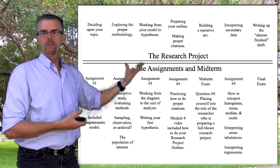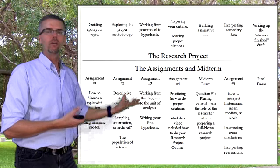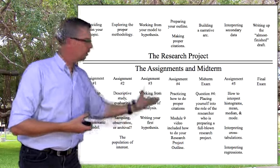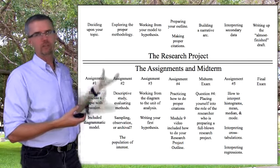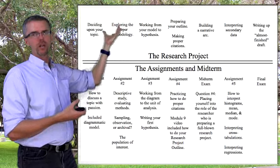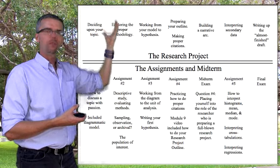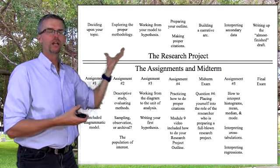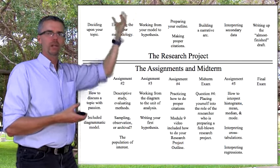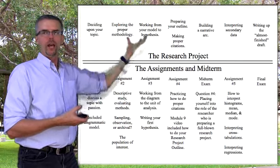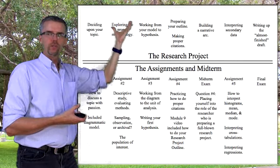Assignment number 2 was about doing a descriptive study and evaluating the methods — whether you'd use sampling, observation, or archival methods — and identifying your population of interest. What I wanted you to take from assignment 1 was how to pick a topic. You didn't have to pick the same topic. From assignment 2, I wanted you to understand how to explore methodology within the topic you choose for your research project.